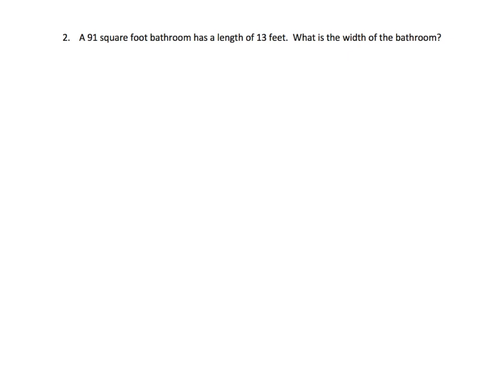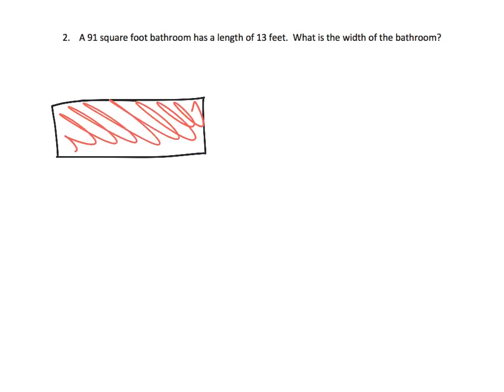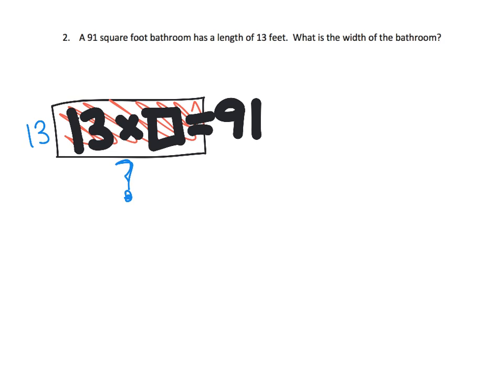Another example here, it's a nice little word problem. It says a 91 square foot bathroom has a length of 13 feet. What is the width? So we've got this bathroom and we know that the length is 13 because it says so, 13 feet, but we don't know what the width is. But we know that when you multiply these, 13 times what, that's supposed to give us 91. So there's our division. So we know that our division is going to be inside the house it's 91 and outside the house is 13.